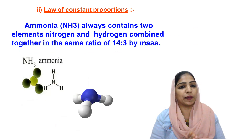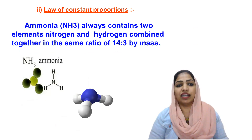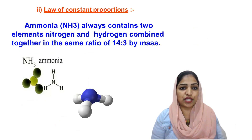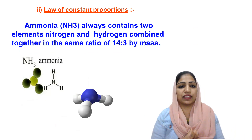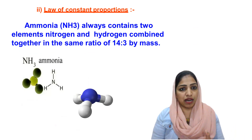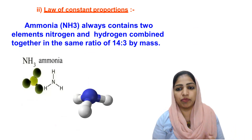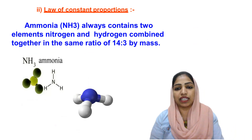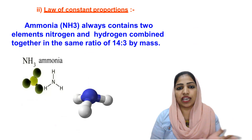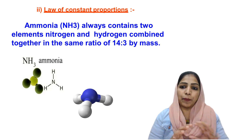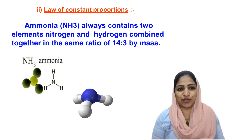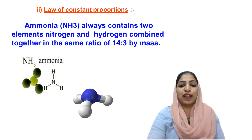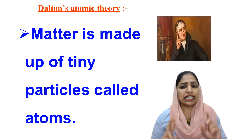Another example is ammonia. NH₃ always contains nitrogen and hydrogen combined together. The mass ratio is nitrogen mass 14 to hydrogen mass 3 (since there are 3 hydrogen atoms). So in ammonia, the mass ratio of nitrogen to hydrogen is always 14 to 3. This is the law of constant proportion.